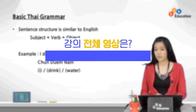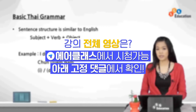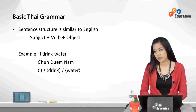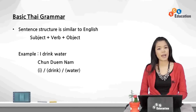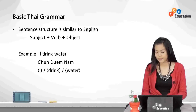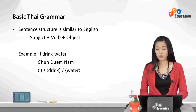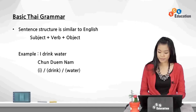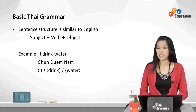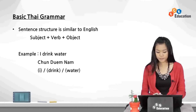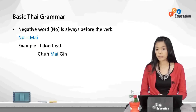For example, 'I drink water' — chan dum nam. Chan means 'I' and is put first as the subject. Chan here is 'I' only for girls. If you're a guy, then you say pom. Next, dum means 'to drink,' which is the verb following the subject. And lastly, nam is 'water,' which is the object and is put after the verb. The negative word, or 'no,' is always before the verb.